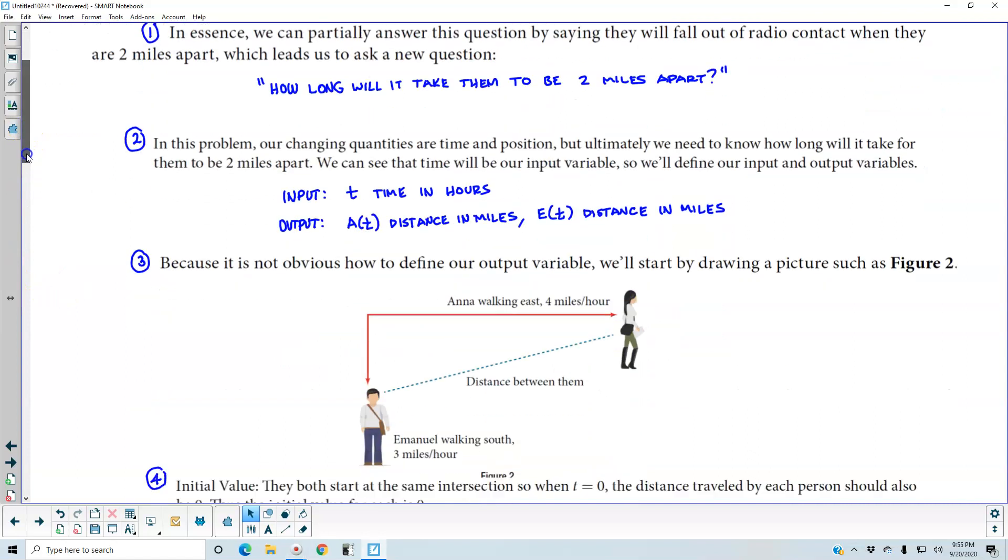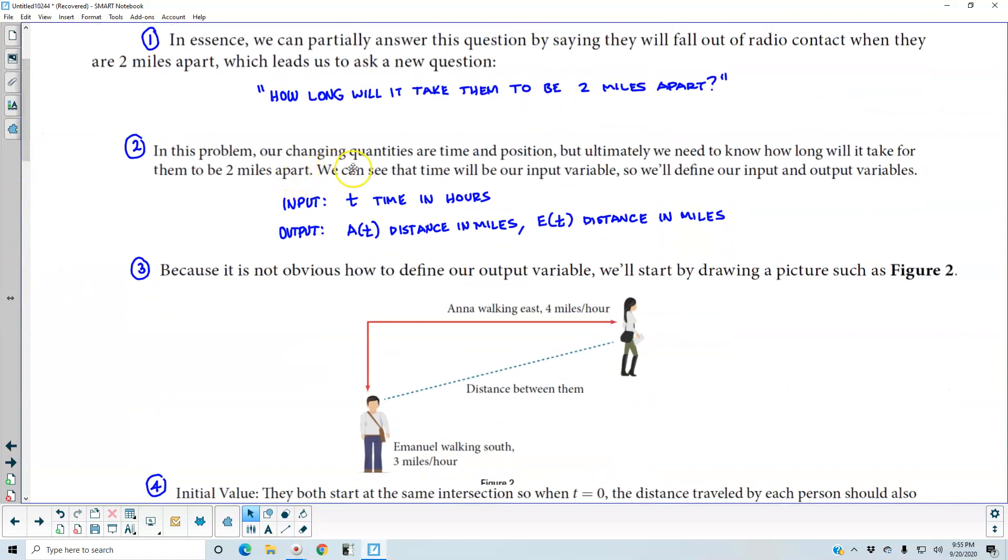Now for step 2. In this problem, our changing quantities are time and position, but ultimately we need to know how long will it take for them to be 2 miles apart. We can see that time will be our input variable, so we'll define our input and output variables. The input, t, is the time in hours.